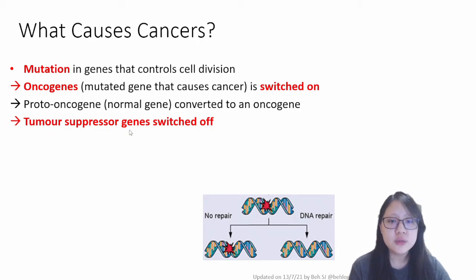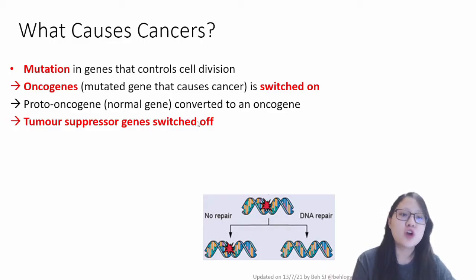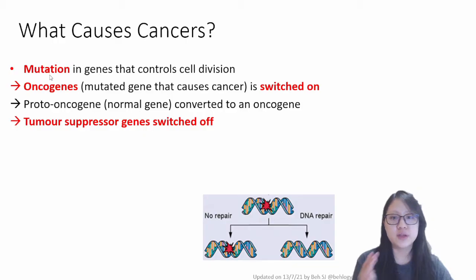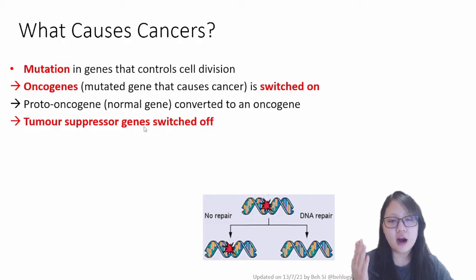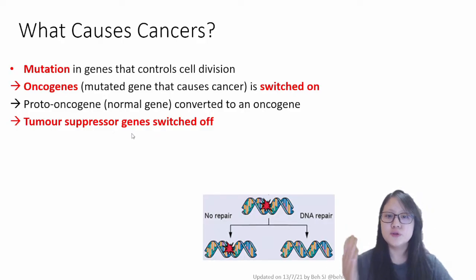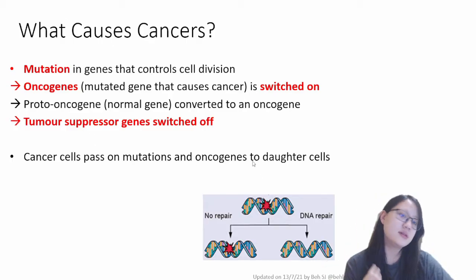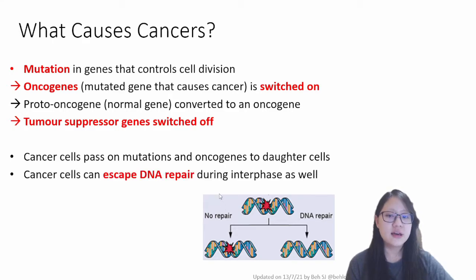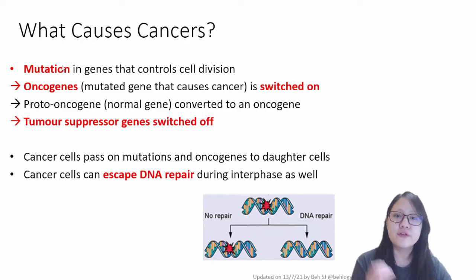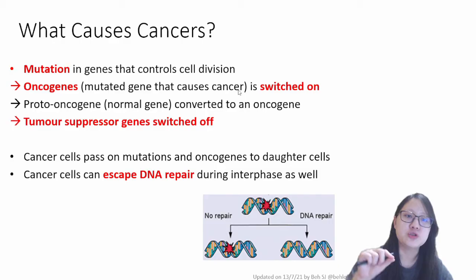Other than oncogenes, there are tumor suppressor genes — genes that normally act against cancer — which may be switched off when a mutation occurs in them. Oncogenes and tumor suppressor genes are both genes involved in controlling cell division. So oncogenes get switched on and tumor suppressor genes get switched off. Cancer cells then pass on these mutations to daughter cells because they can escape DNA repair.